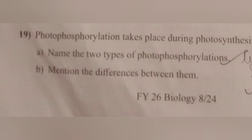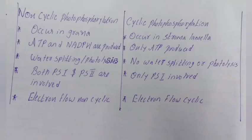Question 19. Photophosphorylation takes place during photosynthesis. A. Name the two types of photophosphorylation. Answer: Cyclic and non-cyclic photophosphorylation. B. Mention the difference between them. Answer: Non-cyclic photophosphorylation occurs in grana; ATP and NADPH are produced; water splitting or photolysis occurs; both PS1 and PS2 are involved; electrons flow non-cyclically. Cyclic photophosphorylation occurs in stroma lamella; only ATP is produced; no water splitting or photolysis; only PS1 involved; electrons flow cyclically.